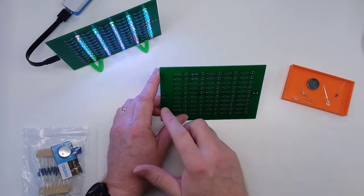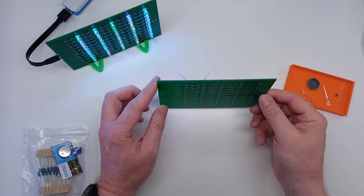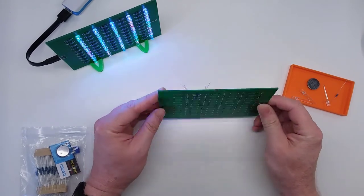Once you get everything soldered in you'll be able to use either of the three power options: the micro USB, the screw terminal, or these two pads on the back to light up your entire panel.